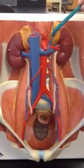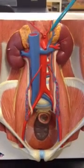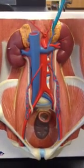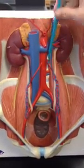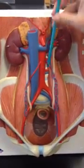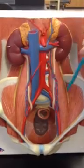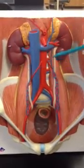The abdominal aorta, which is part of the descending aorta, is going to come through that diaphragm to serve the abdominal contents.